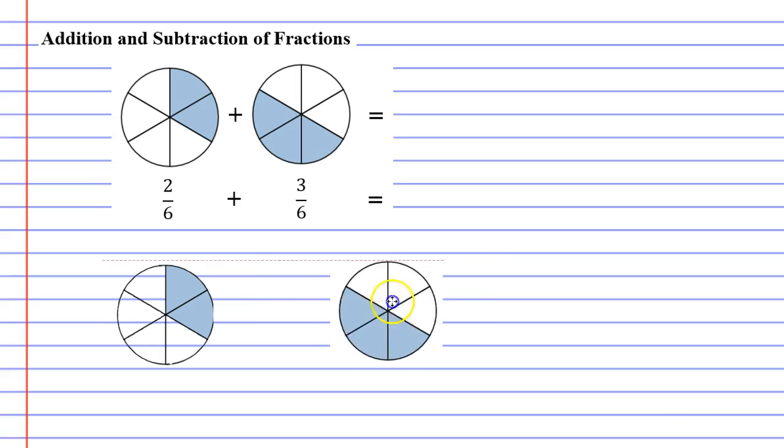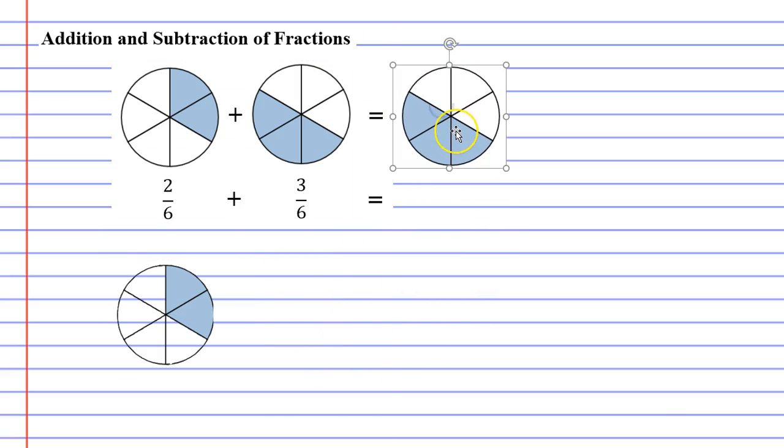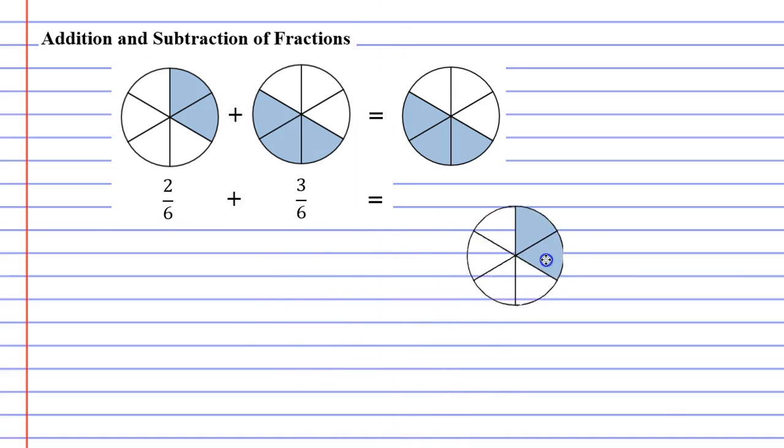So what I've done to help illustrate this is I've got the same diagrams below except I can move these around. So I'm going to take the diagram which represents 3 over 6 and I'm going to add it to the other diagram 2 over 6. And I'm going to do this by superimposing it over the top.